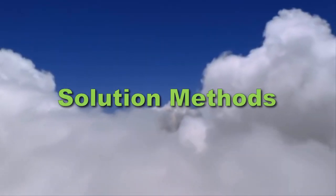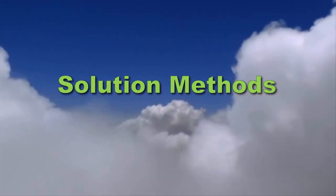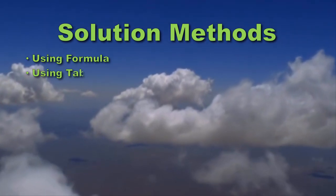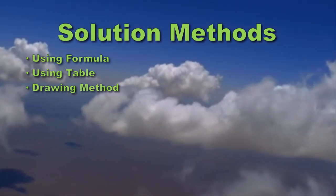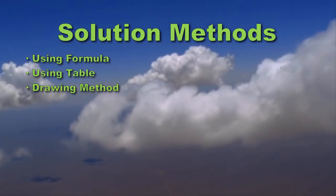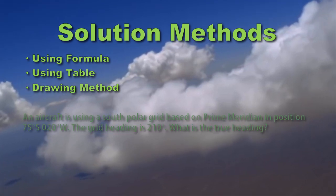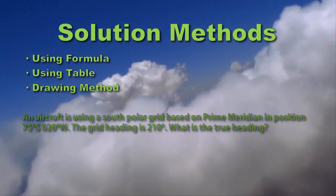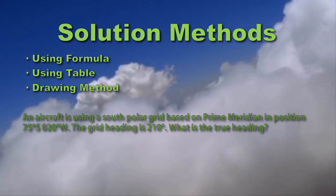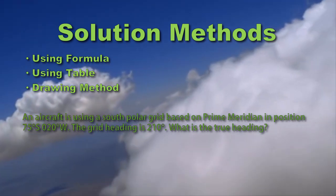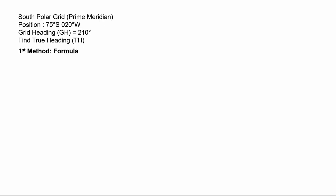There are three methods to solve grid navigation problems: one, using a formula; two, using a table; three, the drawing method. To explain all three, we will use a sample question. An aircraft is using a south polar grid based on the prime meridian, in position 75°S 20°W. The grid heading is 210 degrees. What is the true heading?